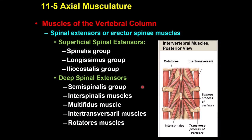The muscles of the vertebral column include muscles attached to both the posterior and anterior vertebrae. Muscles attached to the back are called spinal extensors or erector spinae, important for posture and spinal extension. There are two layers: the superficial layer consists of three muscles from medial to lateral — spinalis, longissimus, and iliocostalis.